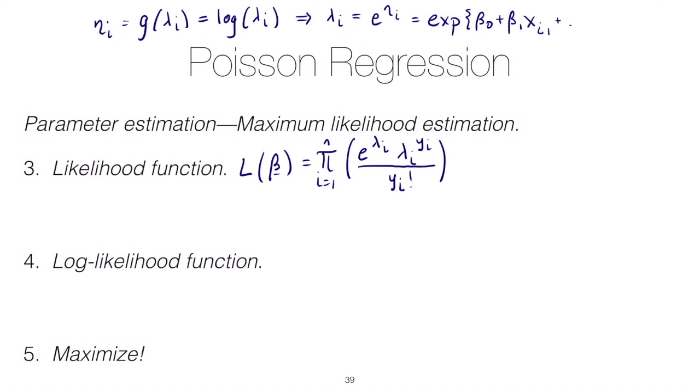Of course, the linear predictor has the betas in it. So this should be e to the beta 0 plus beta 1 x i 1 up through beta p x i p. So that means we can rewrite our likelihood function as the product from i equals 1 up to n of...